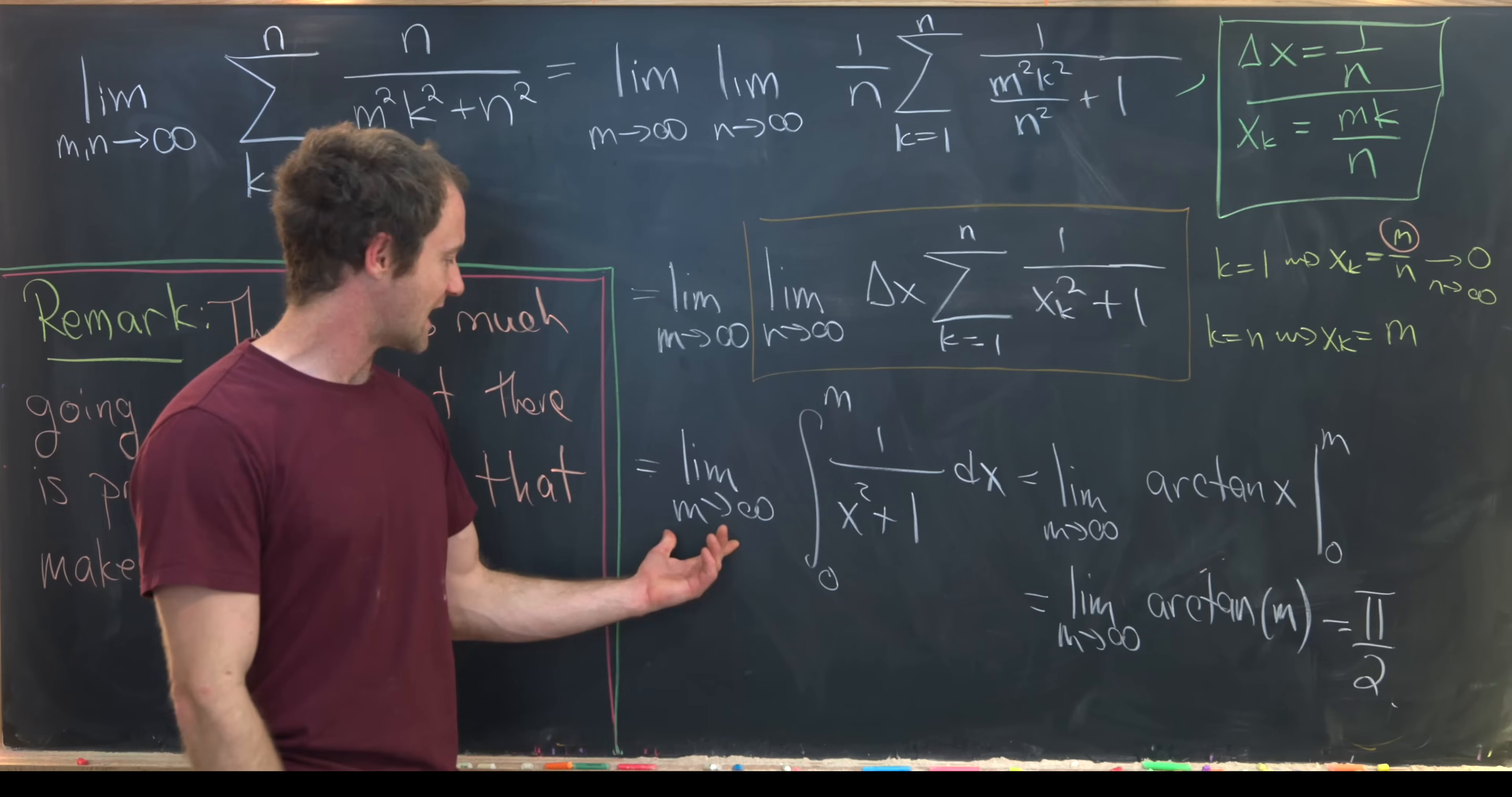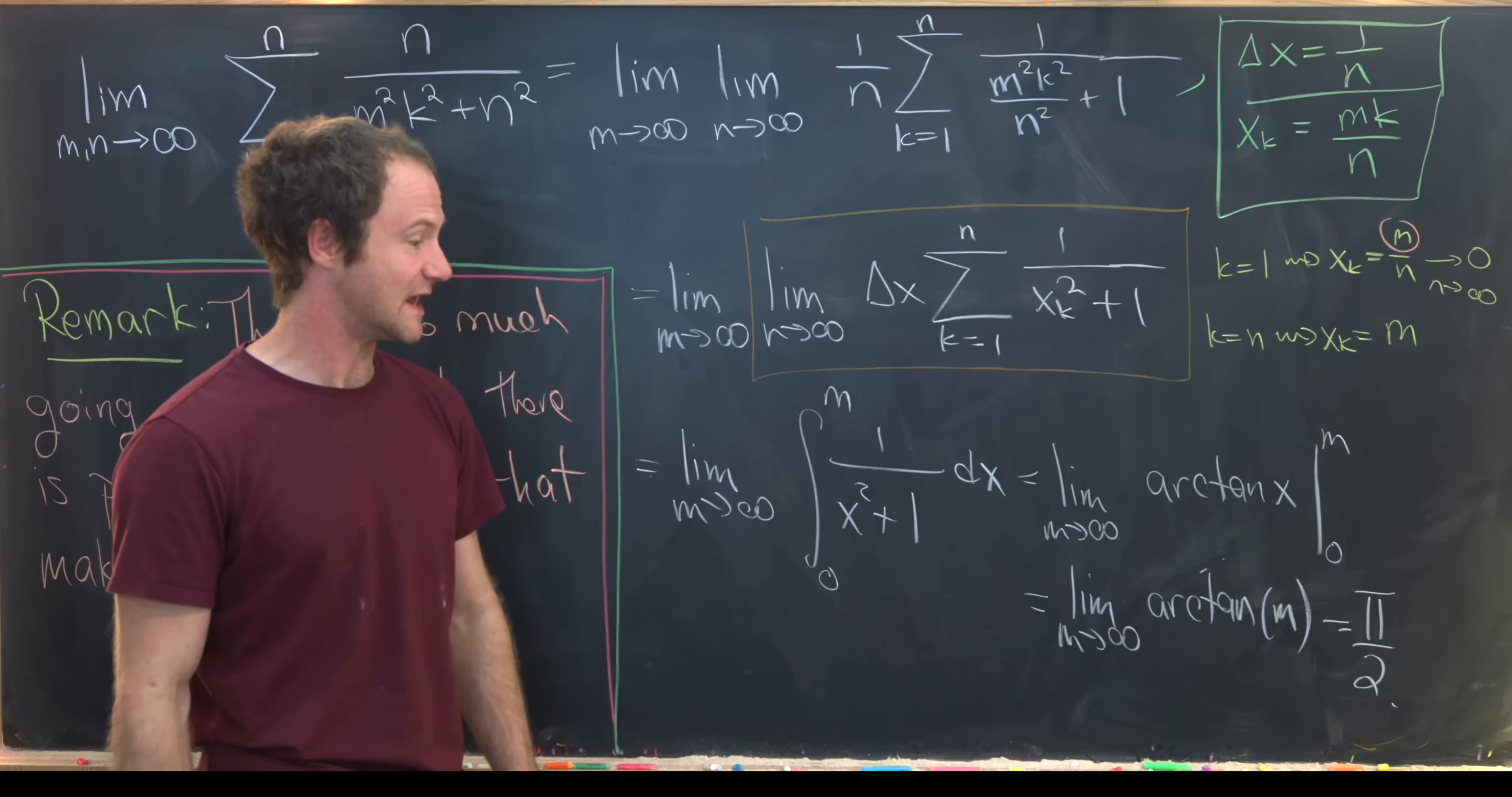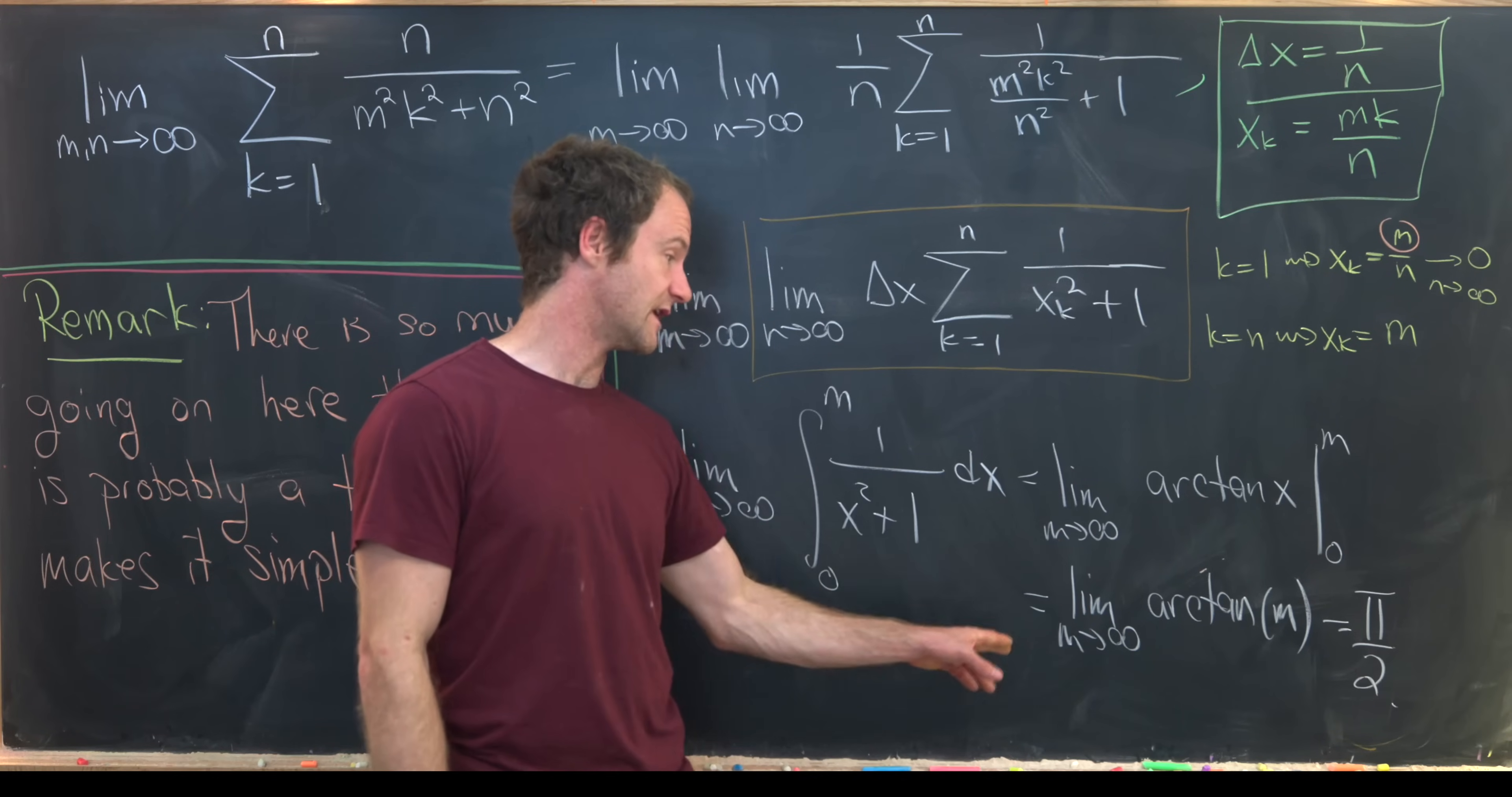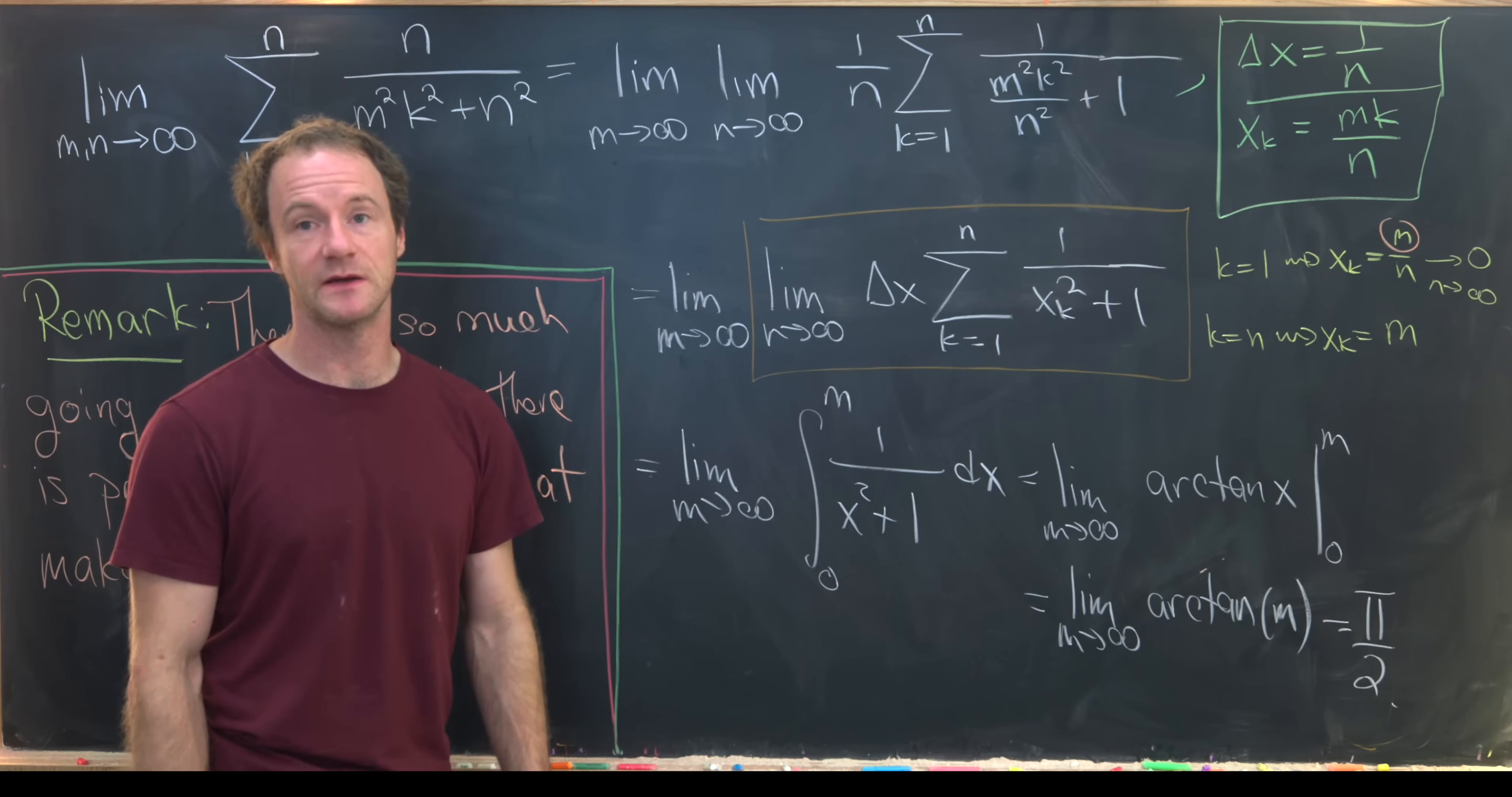Let's see what we've done here. We've taken our double limit of our sum and rewritten it as the limit of the limit of a Riemann sum. That limit of a Riemann sum can be rewritten as a definite integral, so we have a limit of a definite integral that in fact gives us an improper integral.